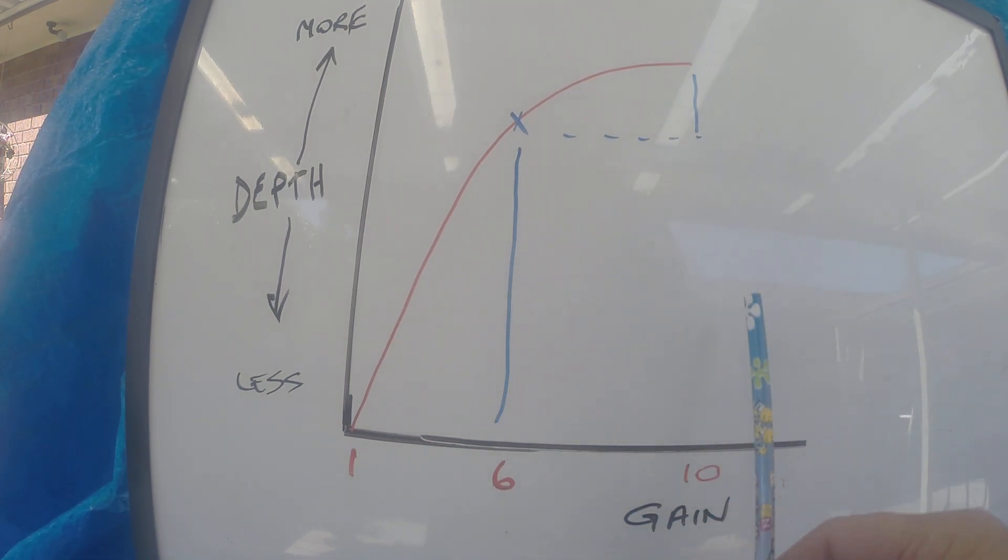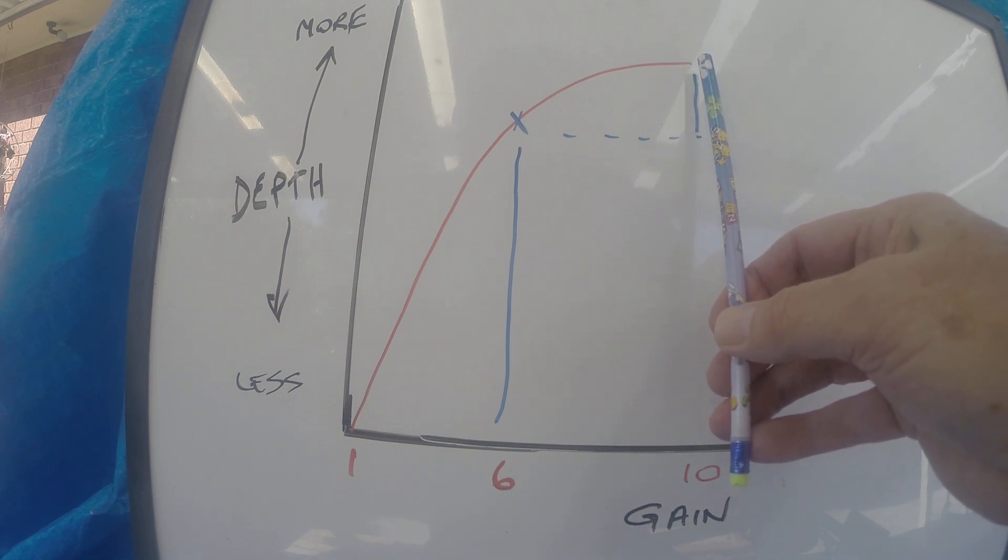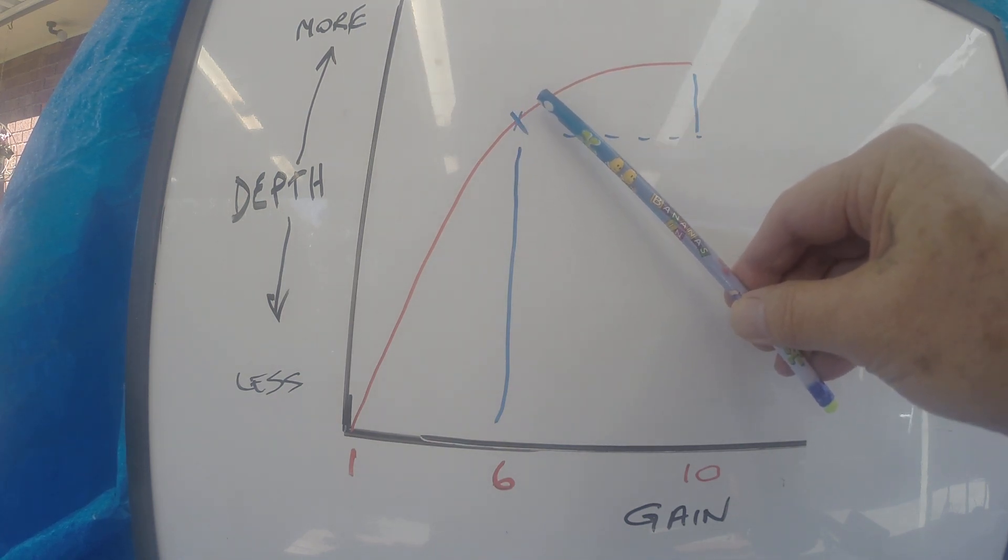It's not to say that you can't use a gain of 10. I do often if I can get it up there, especially with the X coil. I can use gain of 10, so it does give you more depth over 6, but the effect is less between 6 and 10 than it is between 1 and 6.